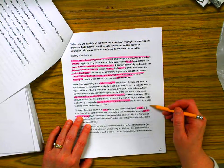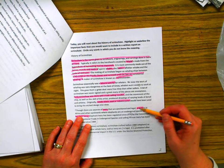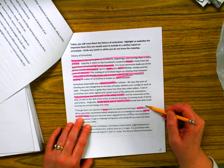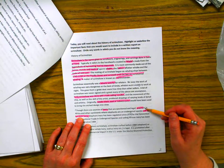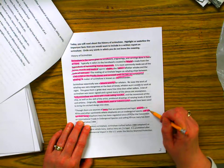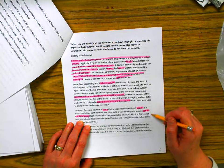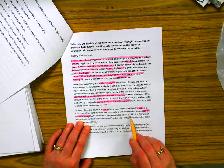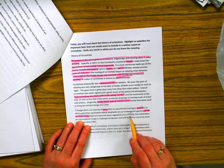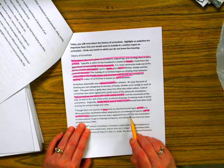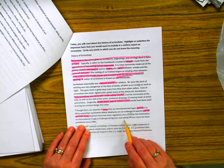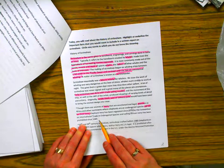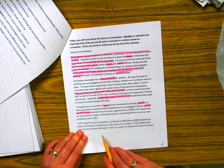Though there are other sources of ivory that are sanctioned and legal, poachers in Africa and other continents where elephants are endangered species still kill for their ivory. Elephant ivory has been regulated since 1976, which isn't that long ago.